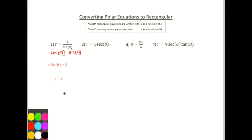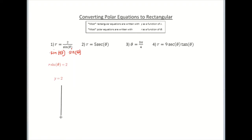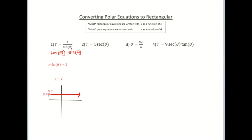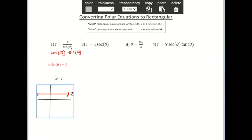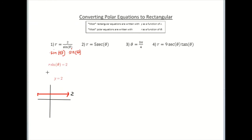So this equation in rectangular form is y equals 2. Hopefully you have a decent idea of what that looks like on a graph — y equals 2 is going to be a horizontal line. I just want to give you a quick glimpse into what the graph is going to look like for each one of these. But right now the main focus is just to convert from polar to rectangular.